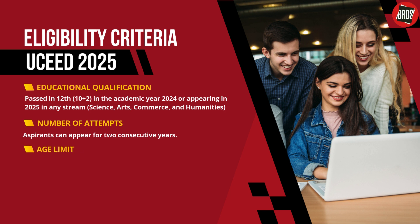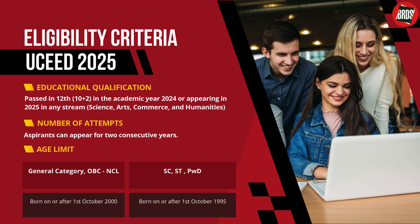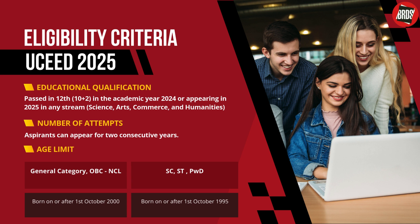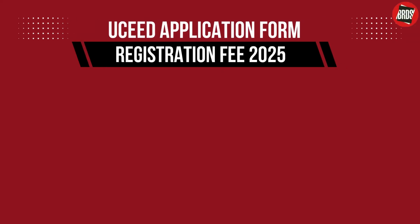Age limit: the candidate should have been born on or after October 1st, 2000 if belonging to the Open, EWS, OBC-NCL category, and born on or after 1st October 1995 if belonging to the SC, ST or PWD category. Candidates should register for applying in UCED 2025.